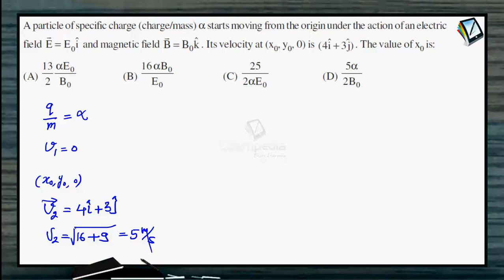Direction-wise as well as magnitude-wise, electric field is constant. So its work done can be calculated by simply multiplying the force with the displacement in the direction of the force, which is x coordinate only. Work done by electric force will be q E naught into x naught, and it must equal change in kinetic energy. So final kinetic energy half m v2 squared, so v2 is 5, minus initial kinetic energy half m v1 squared, that was 0.